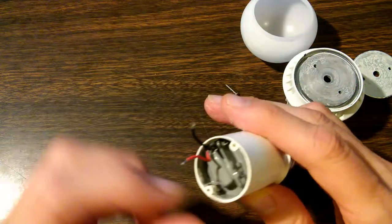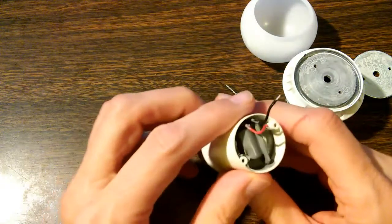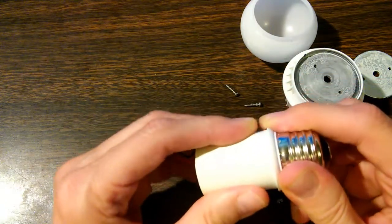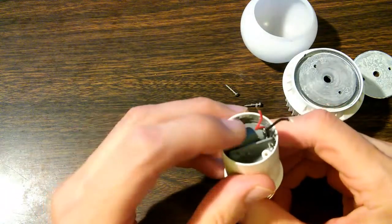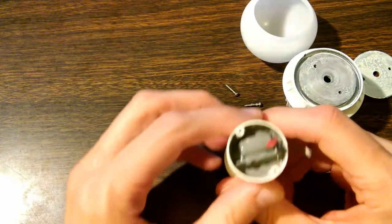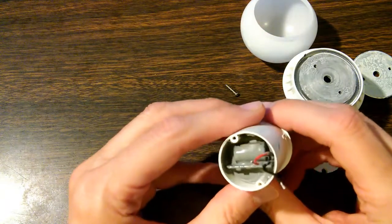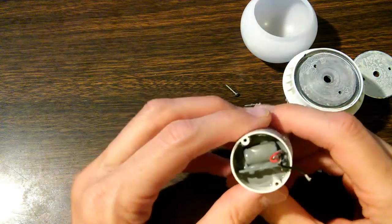There's a circuit board hiding in here in what we would call potting compound. They just drop that circuit in there and pour this gook all over it. It's going to make it pretty hard to take apart and figure out what's going on.